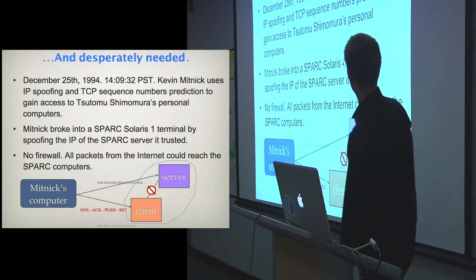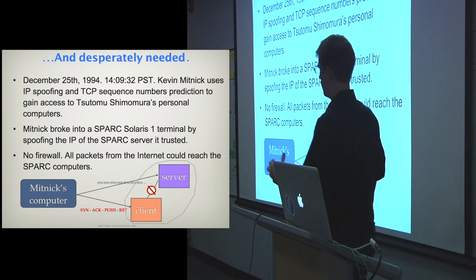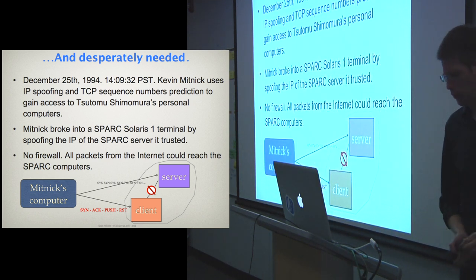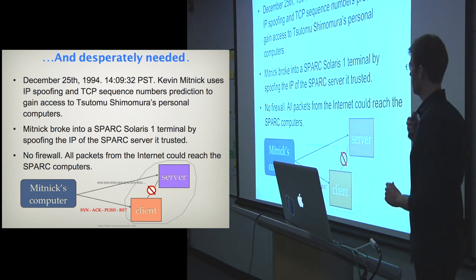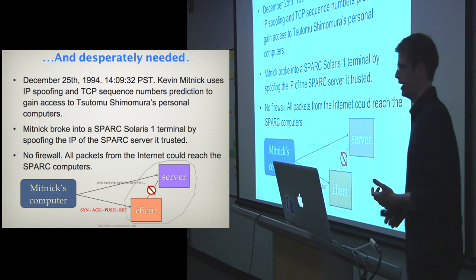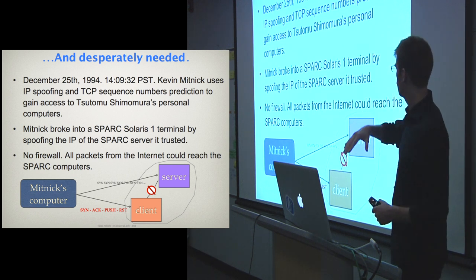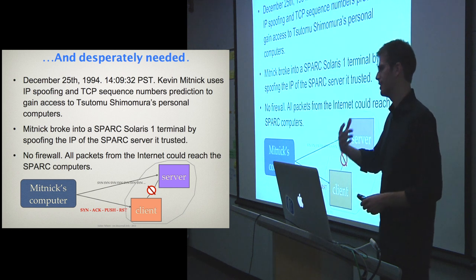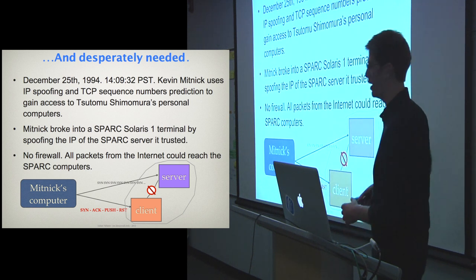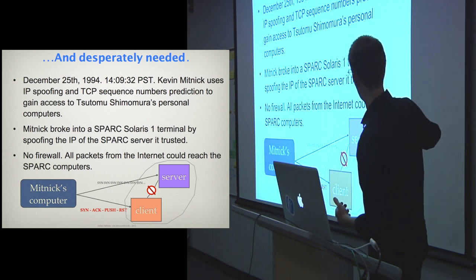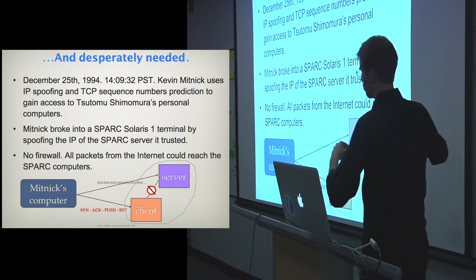Firewalls are also desperately needed. Engineers started building features for packets because security didn't exist in the first version of the internet. One of the first important network-based attacks was documented in 1989 and used by Kevin Mitnick in 1994. He broke into a Sun SPARC station by injecting TCP packets. The SPARC client had a trust relationship with the server based on IP address, so it would accept everything coming from the server. Mitnick took down the server by DDoSing it, injecting SYN packets so the server could not respond.